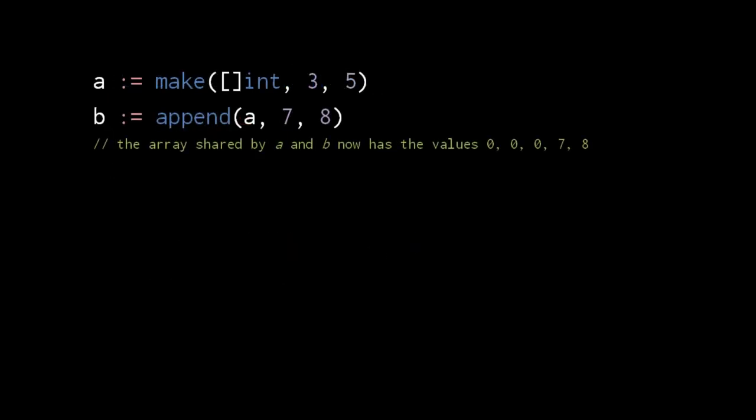The built-in append function takes a slice and returns a new slice in which values have been added past the length of the original. If the new values fit in the capacity of the slice's existing array, the new slice uses the same existing array. If the new values exceed the capacity of the existing array, the new slice gets a new larger array with the values of the original array copied over. Here, the slice a has a length of 3 but a capacity of 5.